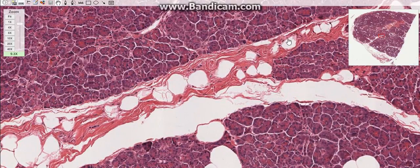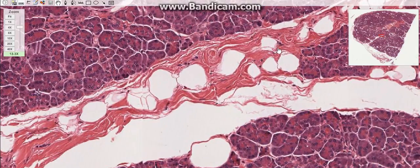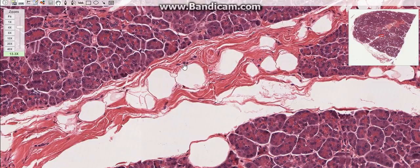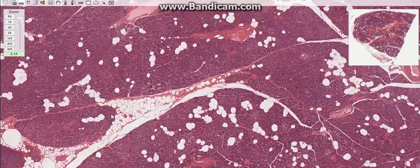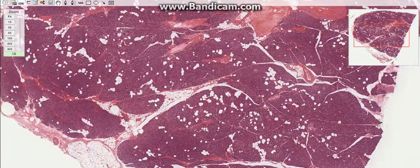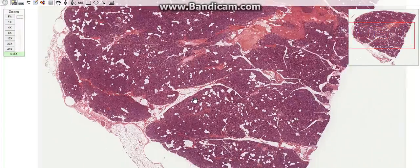The main pancreatic duct is lined by tall columnar epithelium and opens into the summit of the major duodenal papilla, usually in common with the bile duct.